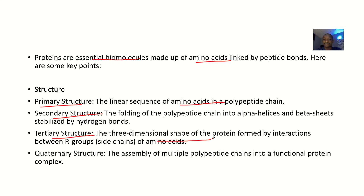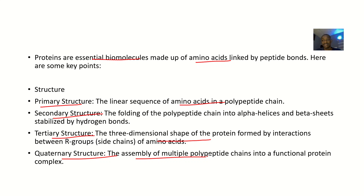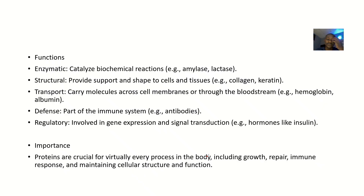The tertiary structure is more like a three-dimensional shape of the protein, formed by interactions between the R groups — the side chains of the amino acids. The quaternary structure is the assembly of multiple polypeptide chains into a functional protein complex, and we call those subunits.